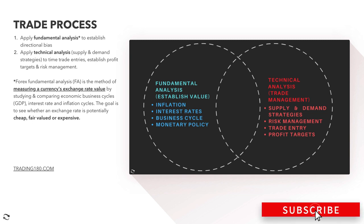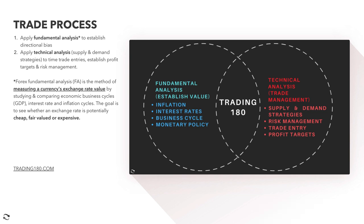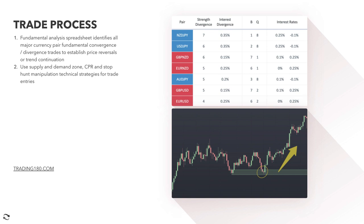If you're new, just a quick introduction to my trade process. What I do is combine fundamental analysis alongside technical analysis to really find the best trades available. We use a fundamental analysis spreadsheet that identifies all major currency pairs and looks for convergence or divergence trades. Divergence trades look for whether strength or weakness is going to continue, while convergence trades look at whether strength is likely to fade and weakness will subside.